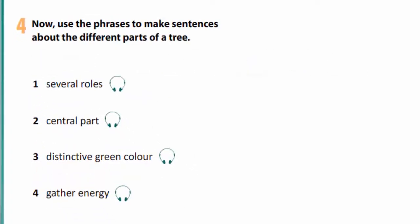Now you are to use the phrases to make sentences about the different parts of a tree. Let's listen to the models. The crown of a tree plays several roles. The central part of a tree is the trunk. Chlorophyll is what gives leaves their distinctive green colour. The crown of a tree gathers energy from the sun.